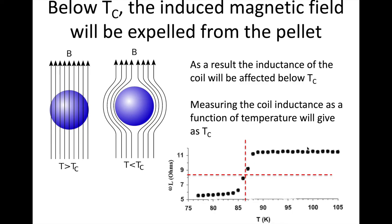Also, note that ours may not look perfect — it's experimental data. When looking at these curves, note not only the critical temperature but also the range of temperatures over which the transition occurs. That can tell you about the quality of the superconductor — is it a very sharp transition or very broad? You want to look at things like that as well.